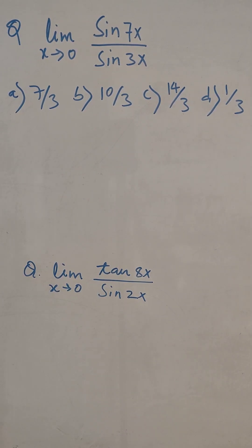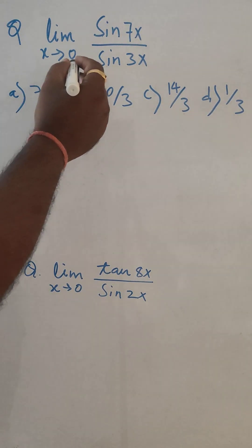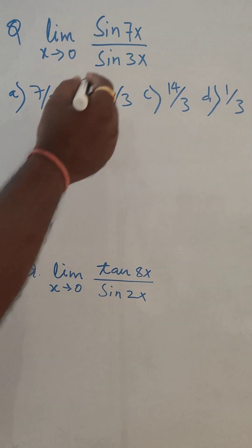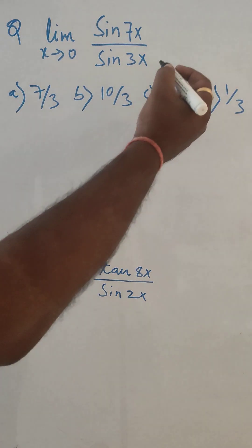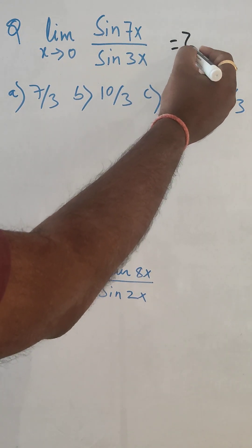Hello, hi everyone. So let's solve limit problem. Here I have written the question: limit x tends to 0, sin 7x divided by sin 3x. Person who knows that formula, the answer can be 7 by 3.